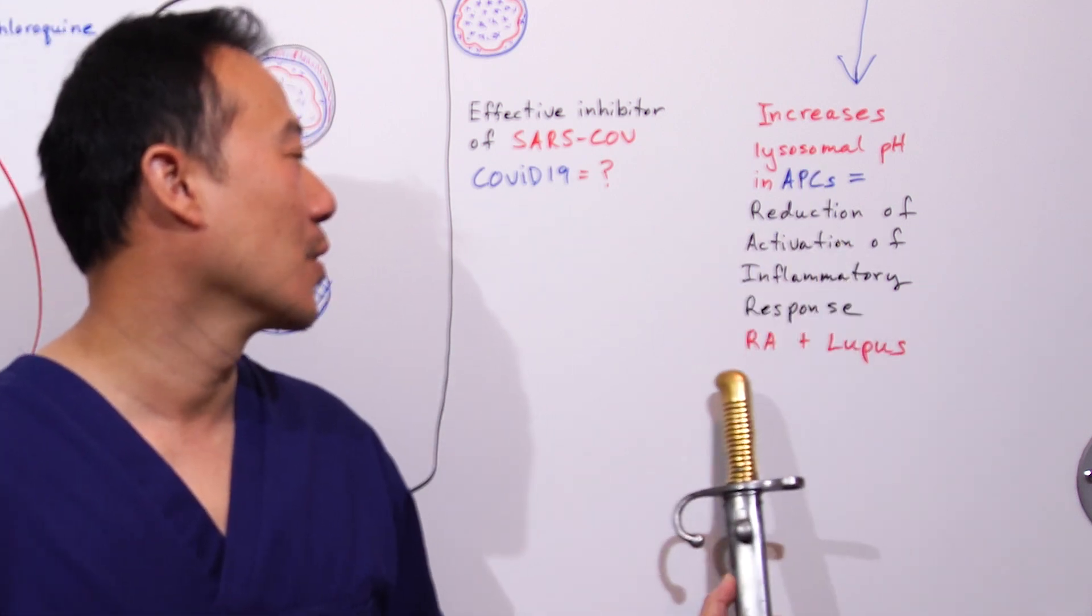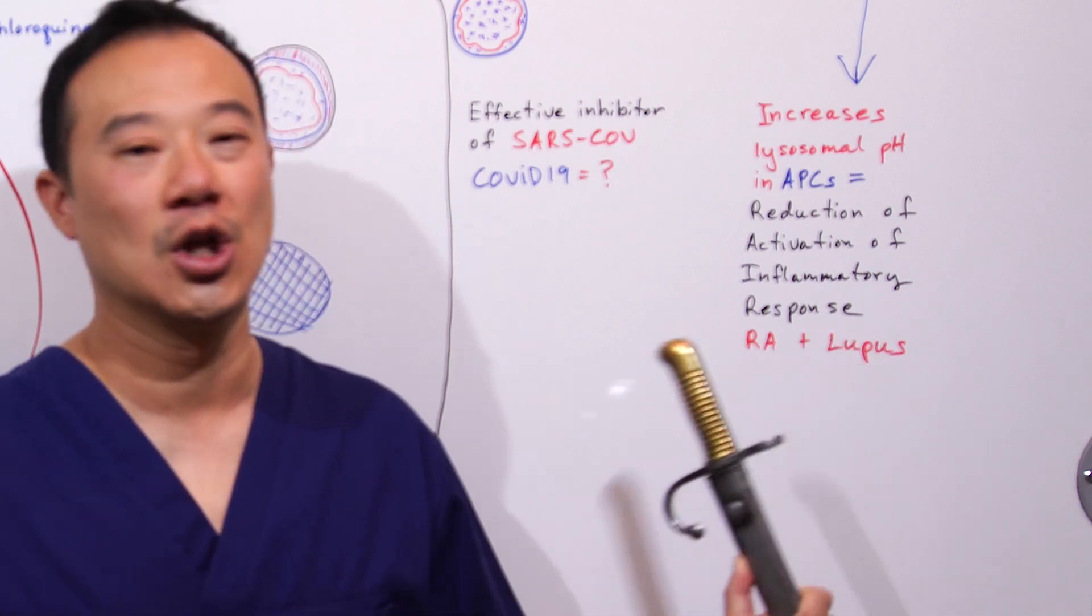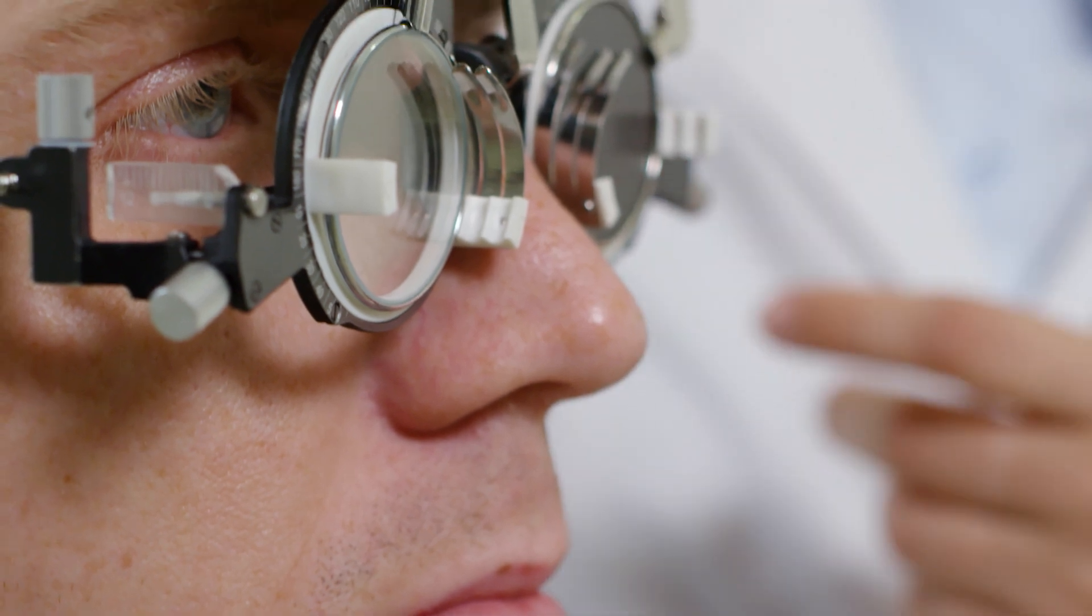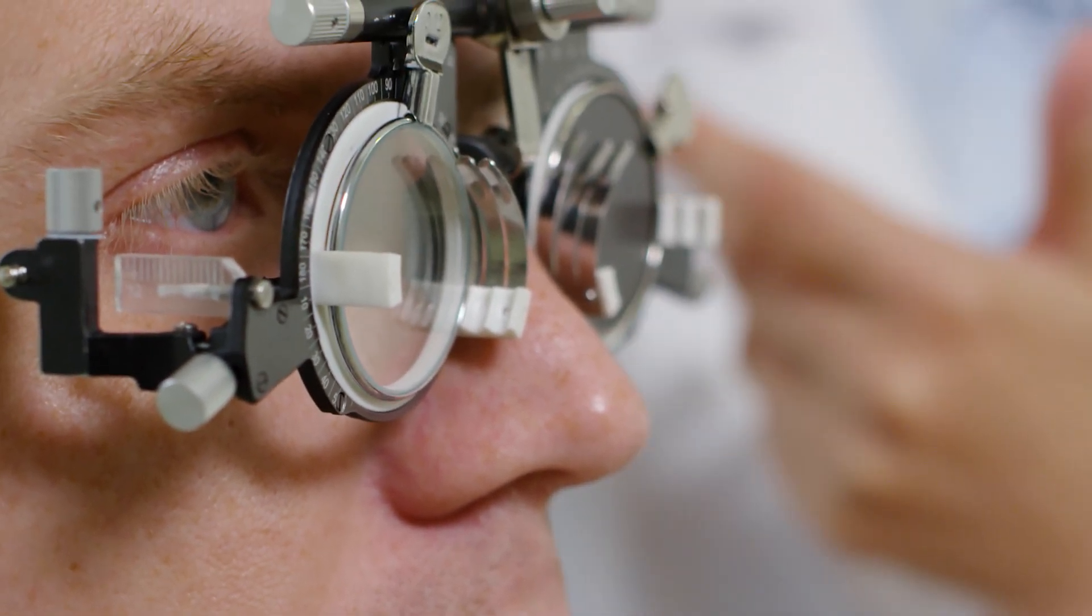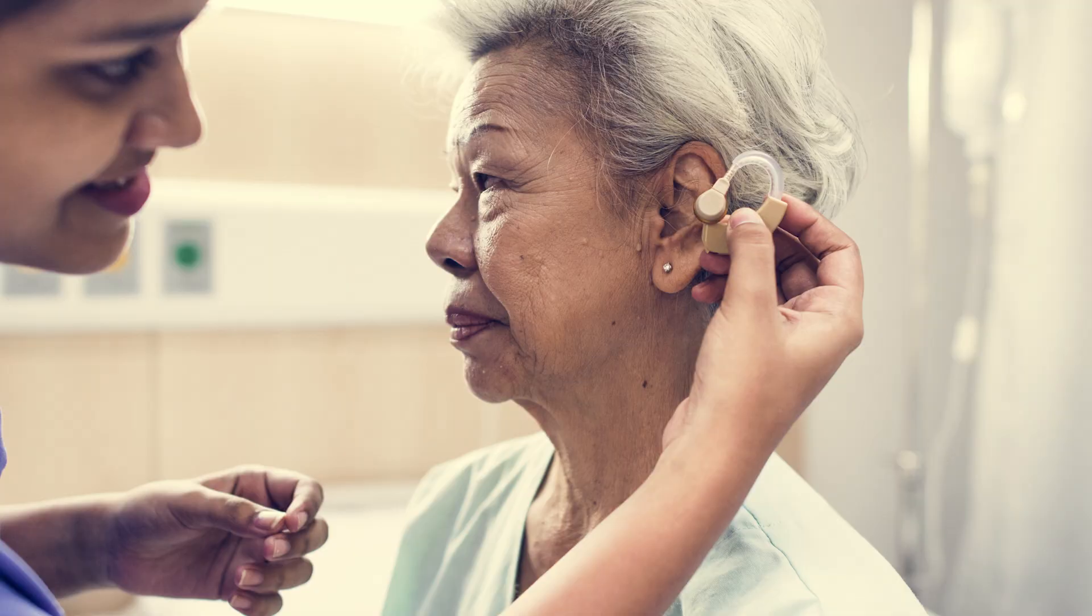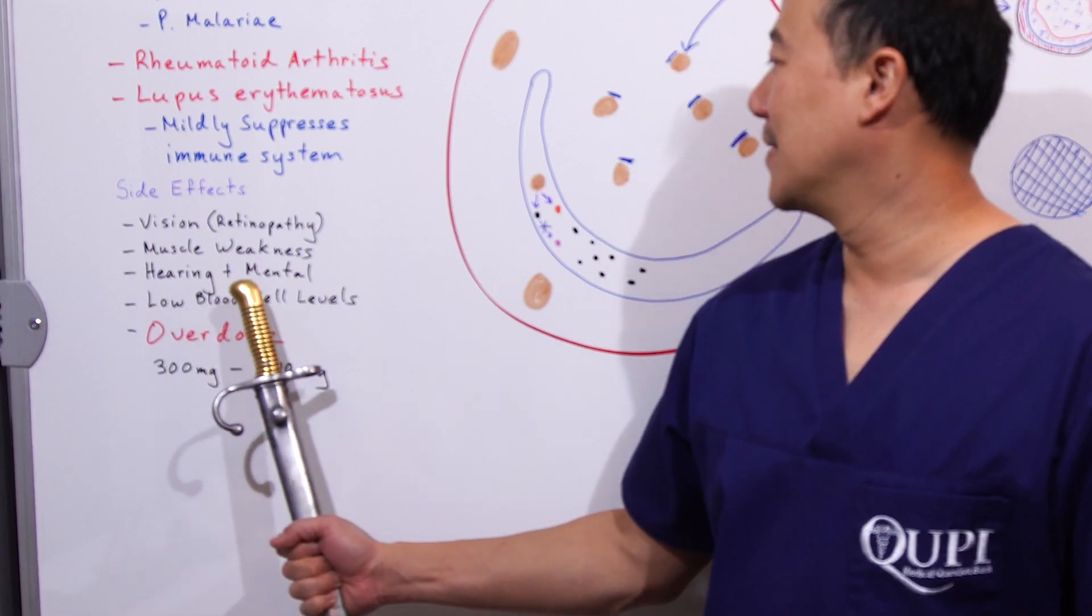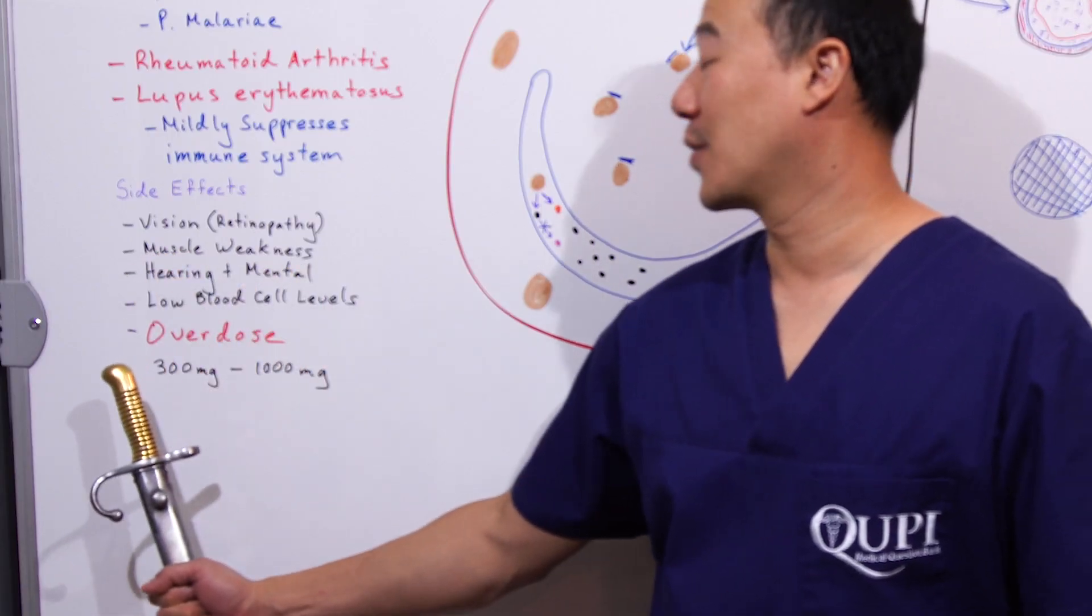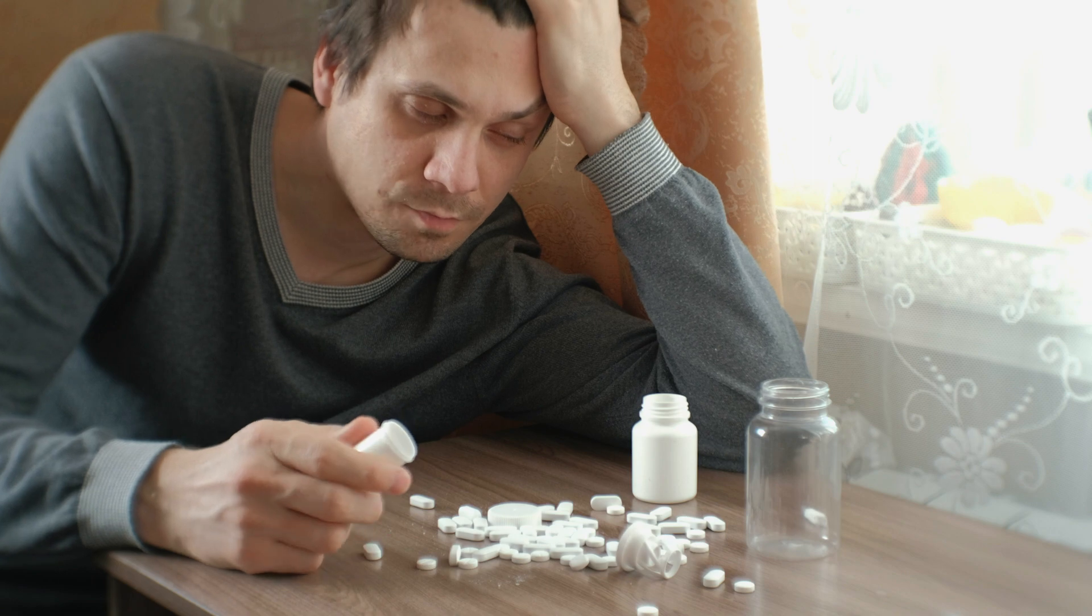Side effects include vision problems—it causes retinopathy, and you can lose your eyesight. You can also damage your hearing with tinnitus and experience mental issues, muscle weakness, low blood cell levels, and of course, overdose. Do not take too much.